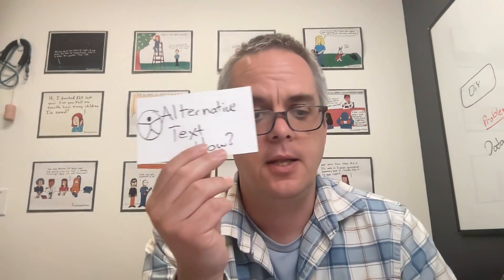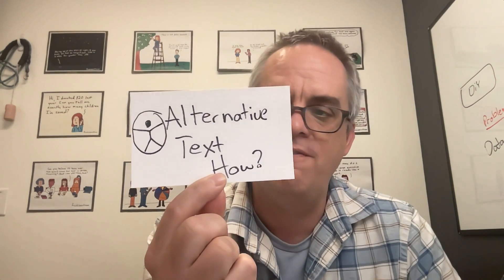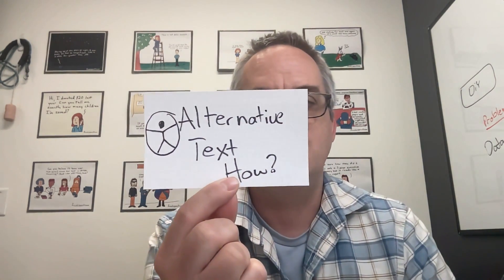Well, I was playing around with Canva the other day, and I clicked on an image, and what did I find? I found a little button that says alternative text. So yes, now Canva at least has the bare minimum of what you need to create something that is accessible to share online.